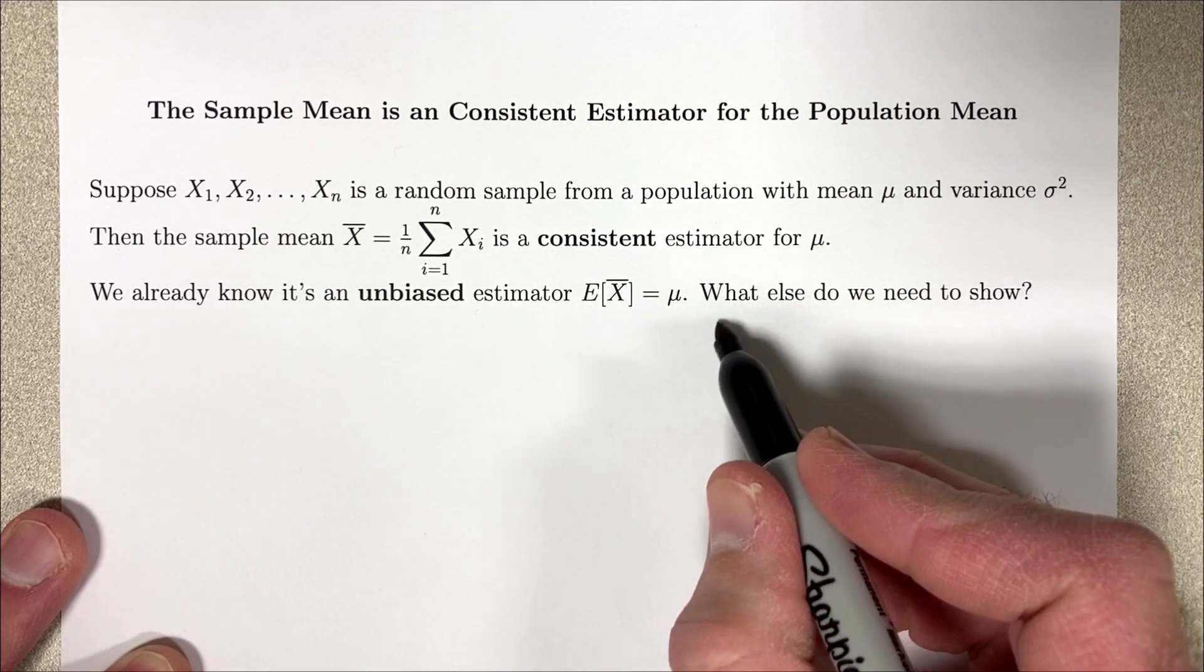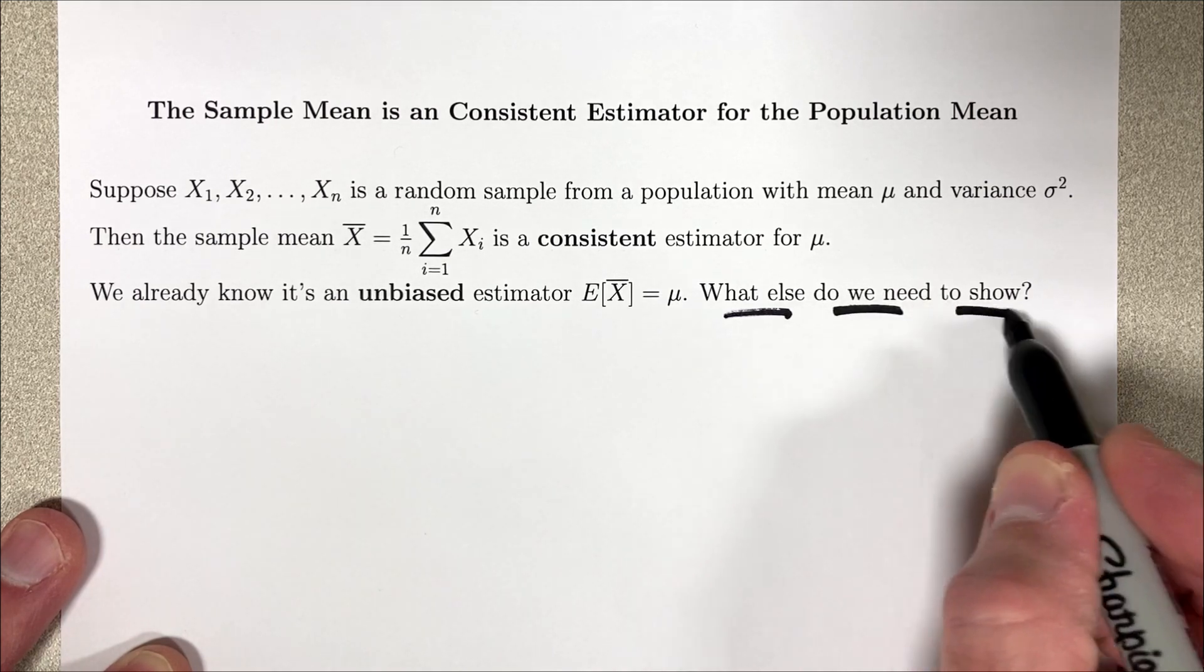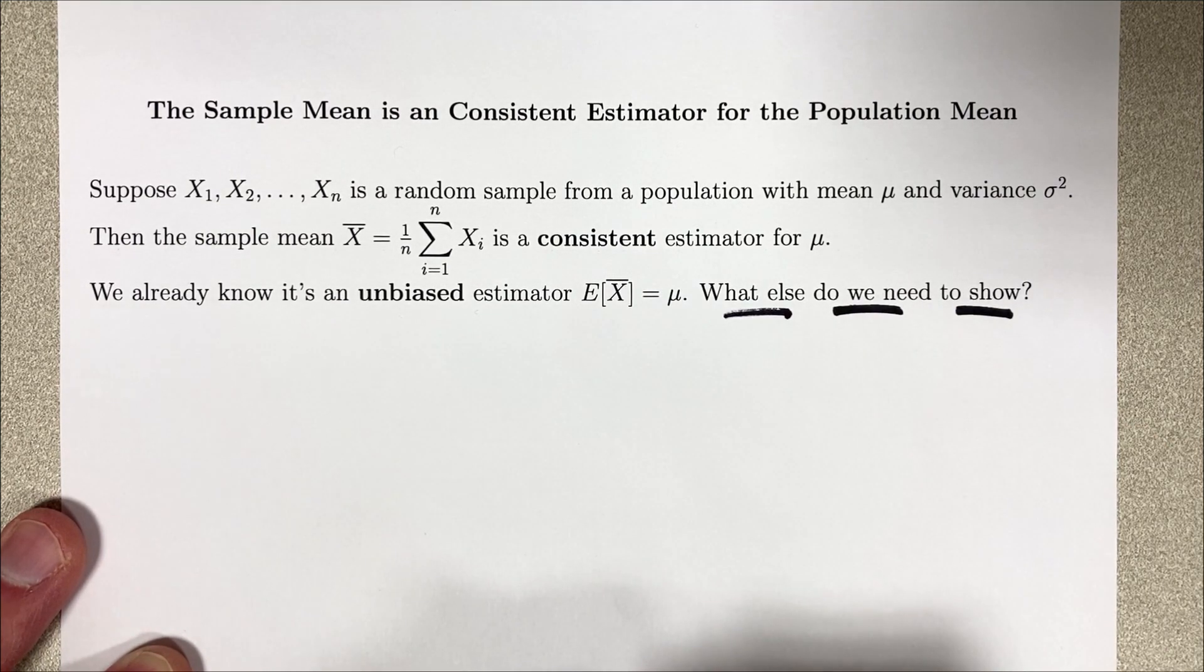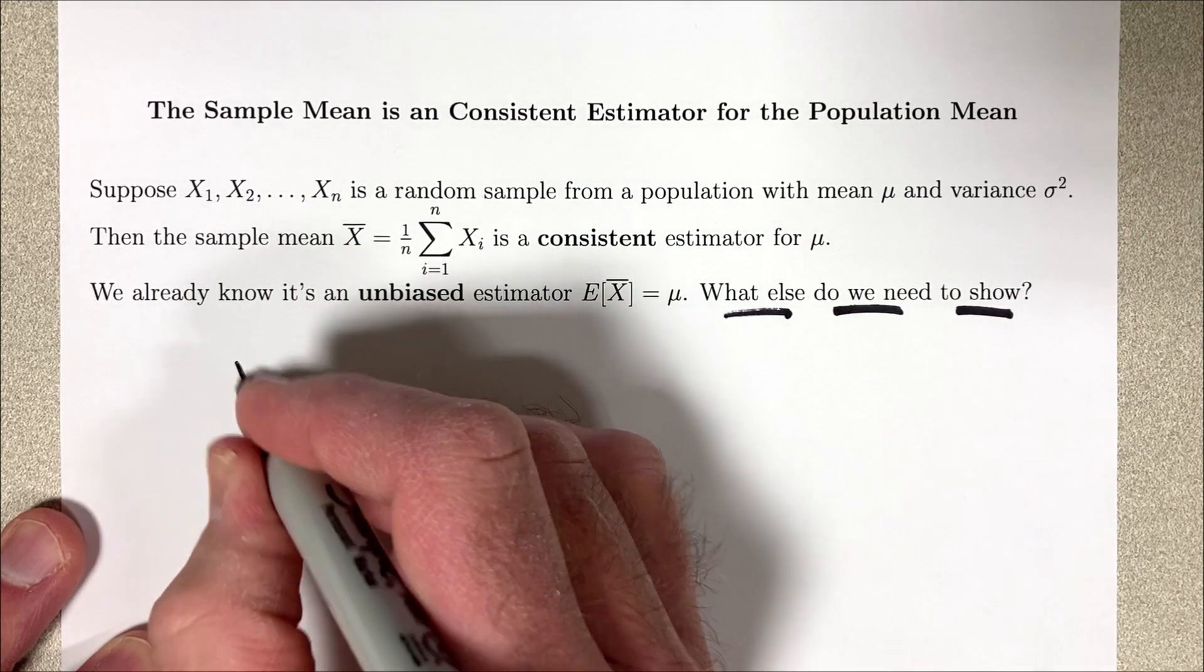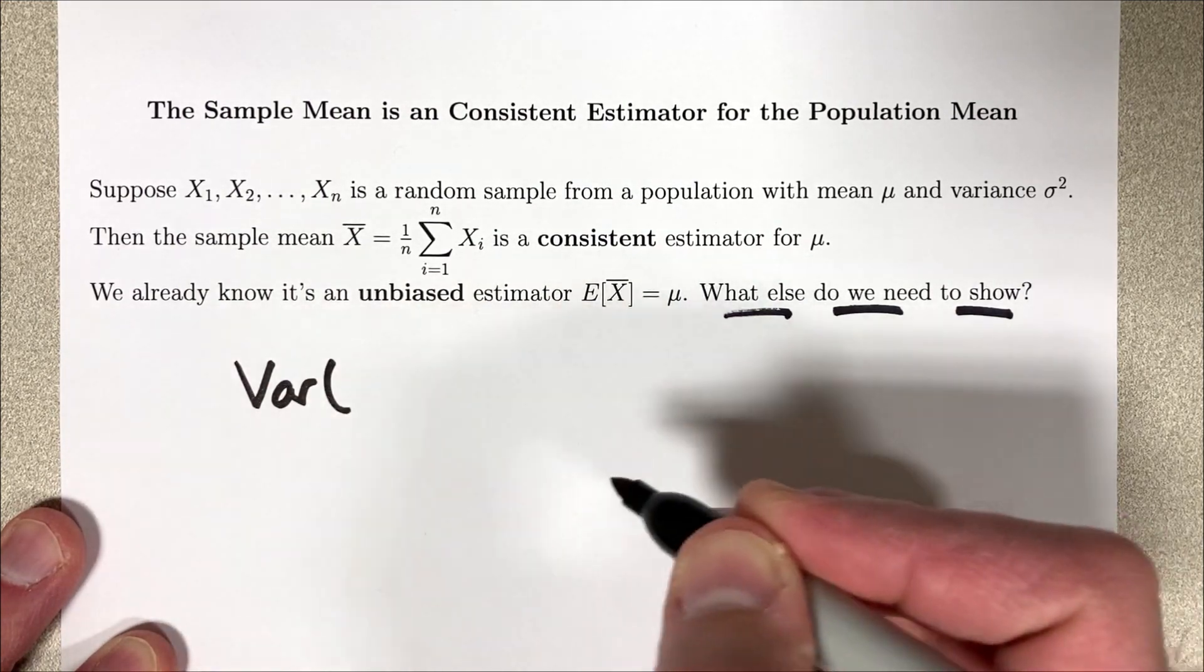To show consistency, what else do we need to show? We need to show that the variance goes to 0 as n goes to infinity. How do we do that? We need to use properties of variances.